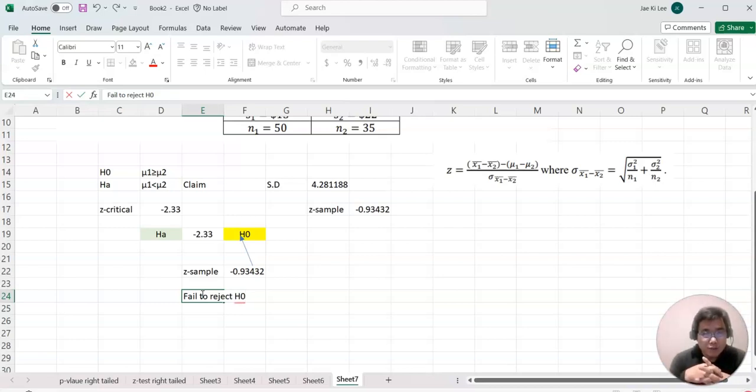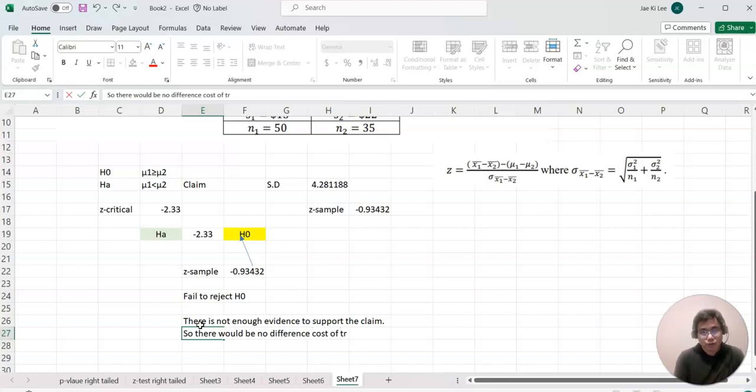Our z sample is in H0 and the claim was in HA. Therefore, we can say there is not enough evidence to support the claim. There would be no difference in the cost of traveling between two states. That's the answer for this problem.